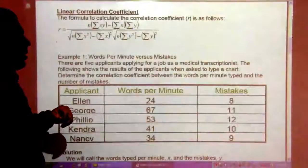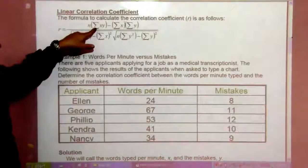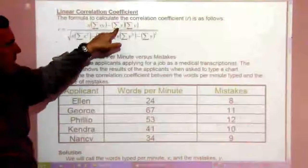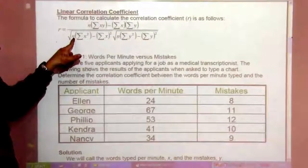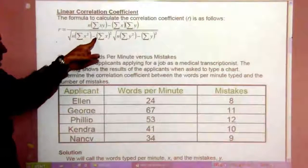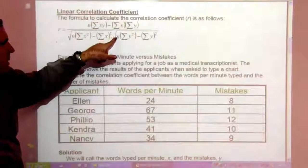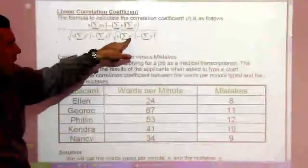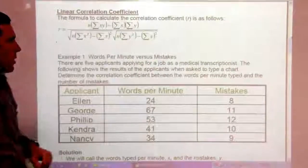So the formula to calculate the correlation coefficient R is as follows. N the number of data points times the sum of X times Y minus the sum of all the X's times the sum of all the Y's over the square root of N times the sum of the X squared minus the sum of Y of that quantity squared.